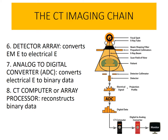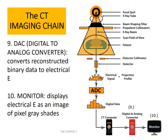Component number eight is the CT computer or array processor. This is where reconstruction of binary data leads to the production of image data that eventually will be seen on a monitor. Before that can happen, component number nine — the digital to analog converter, or DAC — is introduced. Its function is to convert reconstructed binary data to electrical energy. Number ten is the monitor, whose function is to display the electrical energy as an image of pixel gray shades.